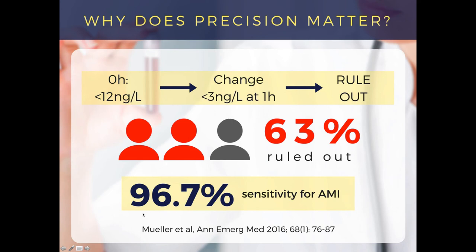Little caveat: would you accept a 3.3% miss rate — 3.3% of patients with acute MI missed by this strategy, not even looking at adverse events at 30 days? You'll have to accept that risk if you're going to use it. I wouldn't use it by itself — I'd use it with a risk score, and we'll come on to those in a minute.